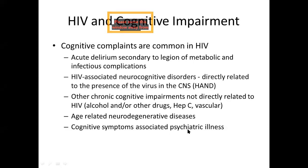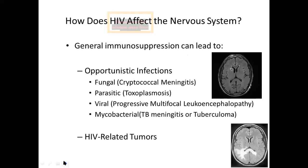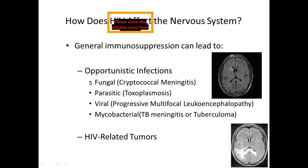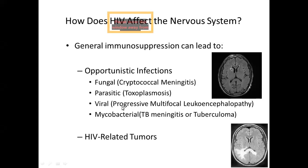Cognitive symptoms associated with psychiatric illness — depression can cause a lot of cognitive symptoms. General immunosuppression can lead to CNS opportunistic infections. There are an array of CNS OIs: fungal cryptococcal meningitis, CNS toxoplasmosis, viral affection like JC virus causing progressive multifocal leukoencephalopathy, then TB — most important mycobacterial infection causing TB meningitis or tuberculoma. All these opportunistic infections can cause neurocognitive deficits in a PLHIV.